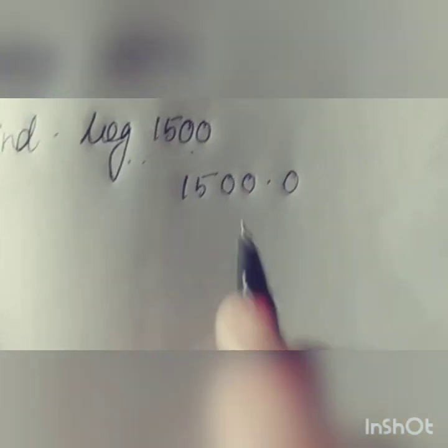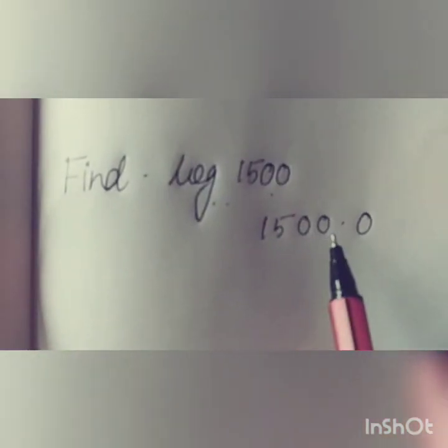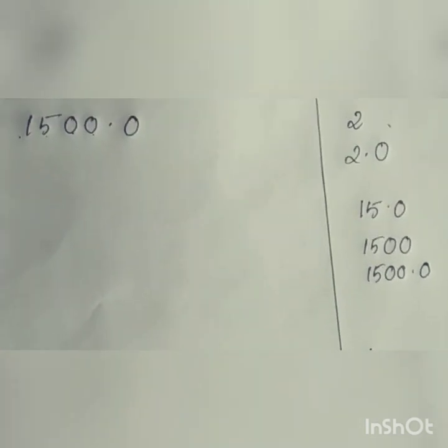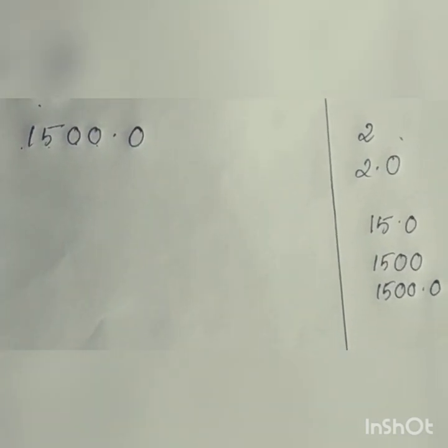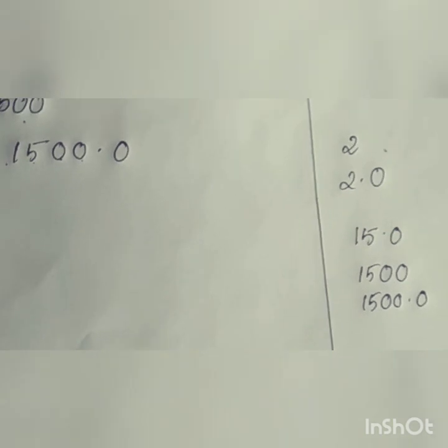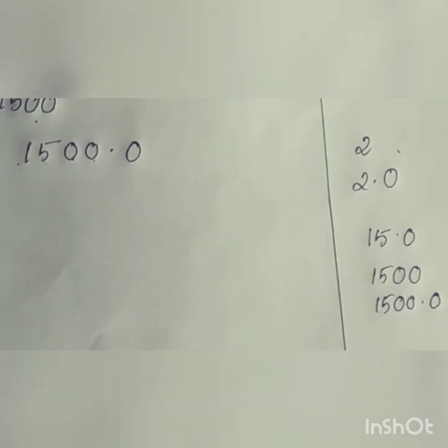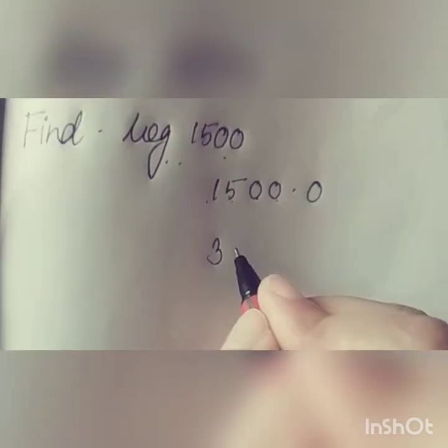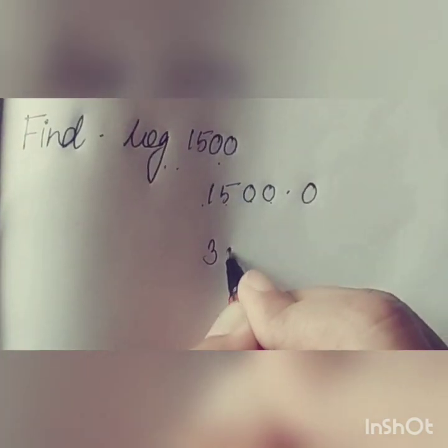Now count how many digits are there before the decimal: 1, 2, 3, 4. So write 4. Then subtract 1, because we will always have to subtract 1 from it. So 4 minus 1 is 3. Just write 3 and give a decimal point.